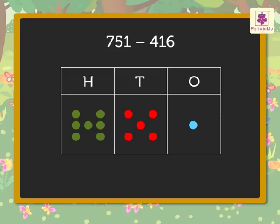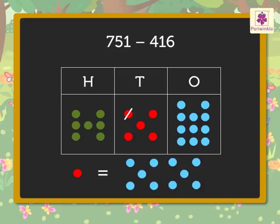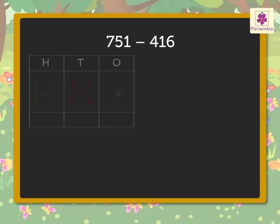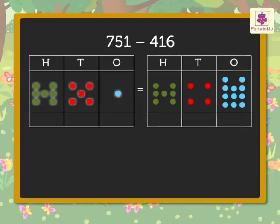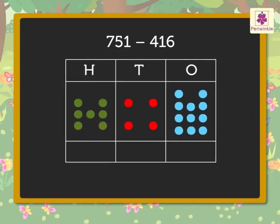So, we regroup one red dot to ten blue dots as we already know that one red dot is equal to ten blue dots. So, now we represent 751 with dots like this.